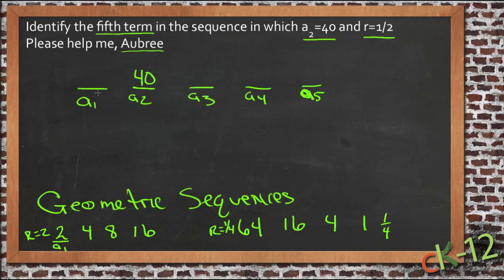That tells us first of all that the first term must have been twice this one, because the second term is half of the first one. So the first term must have been 80. So 80 times 1/2 is 40.